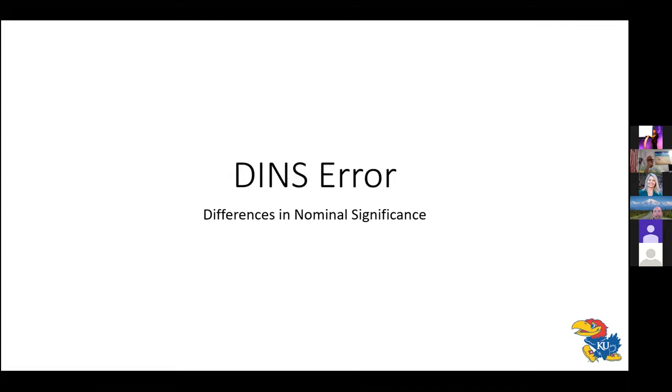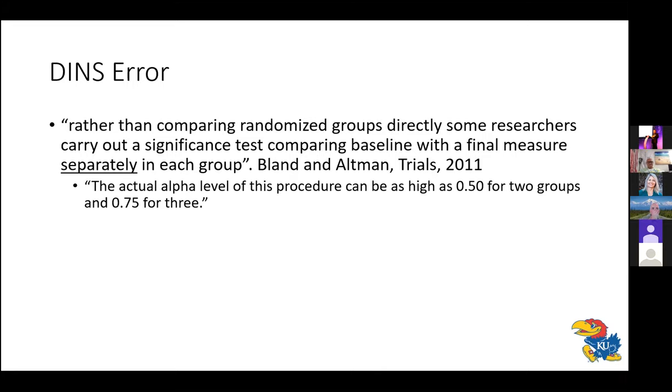All right. Issue number two, DIN's error, or differences in nominal significance. So David Allison's group out of the University of Indiana has actually been pushing this in the nutrition literature a lot and writing a fair number of letters to the editor and so forth, addressing studies that have committed this error. So what is the DIN's error? I actually came upon this in an older paper by Bland and Altman. So those of you who Bland and Altman, Bland-Altman plots and so on, these are the same two people. This is a paper from the journal trials from 10 years ago now.